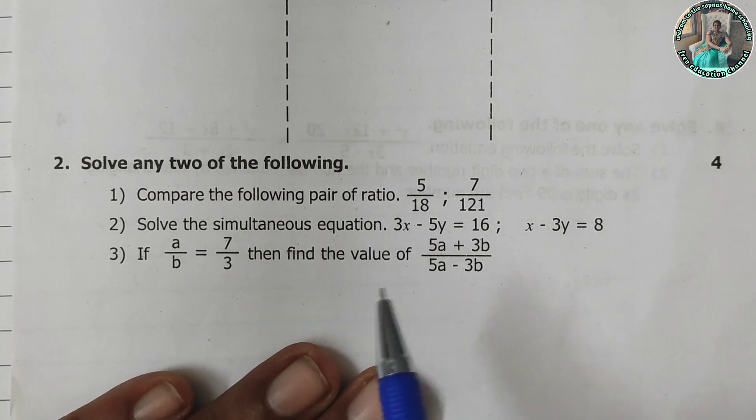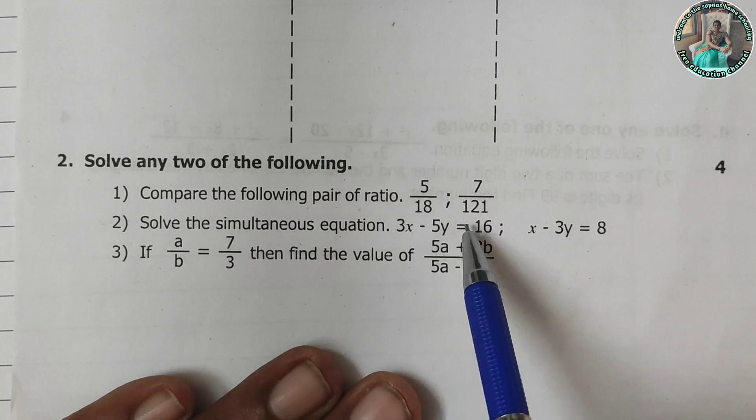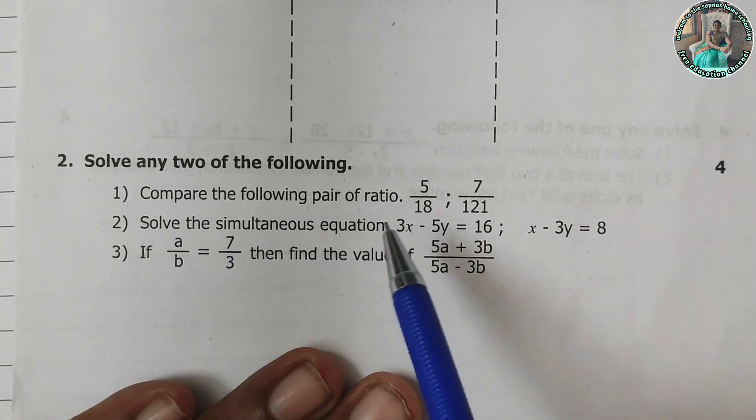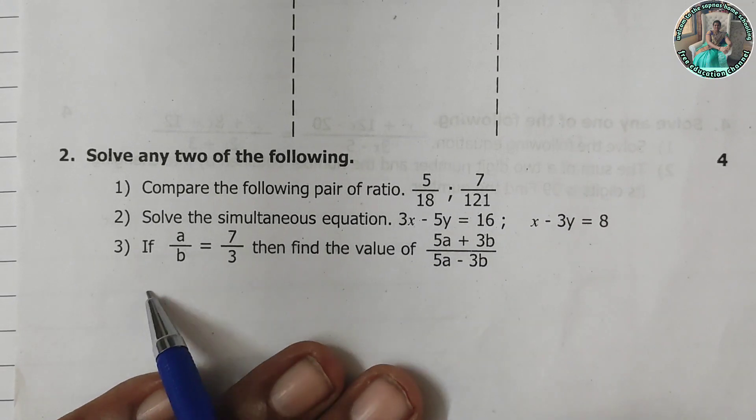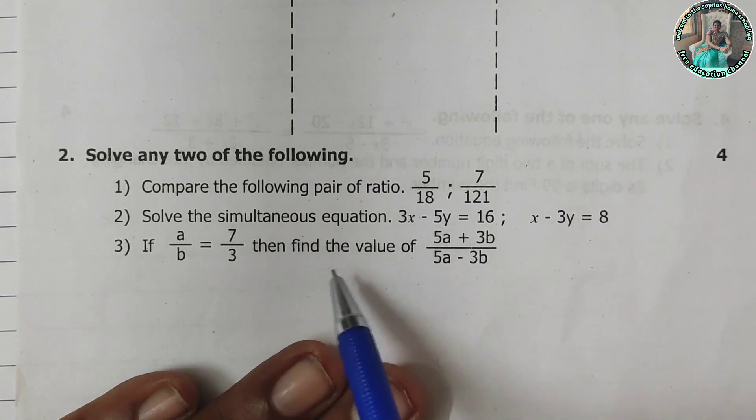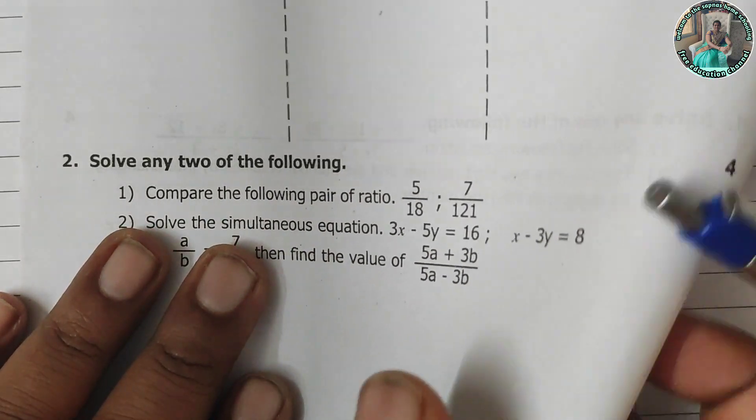Solve any two of the following. Compare the following pairs of ratio, 5 upon 18 and 7 upon 18. Solve the simultaneous equation, 3x minus 5y is equal to 16, x minus 3y is equal to 8. If a upon b is equal to 7 upon 3, find the value of 5a plus 3b upon 5a minus 3b.